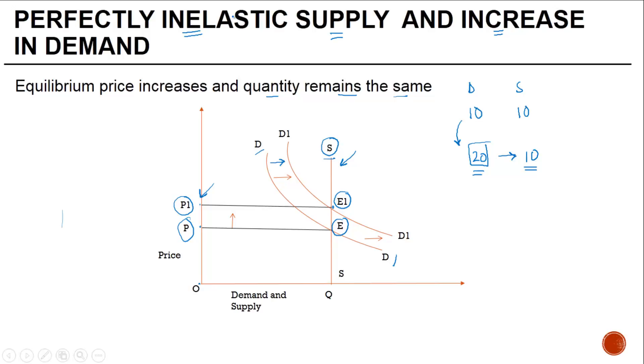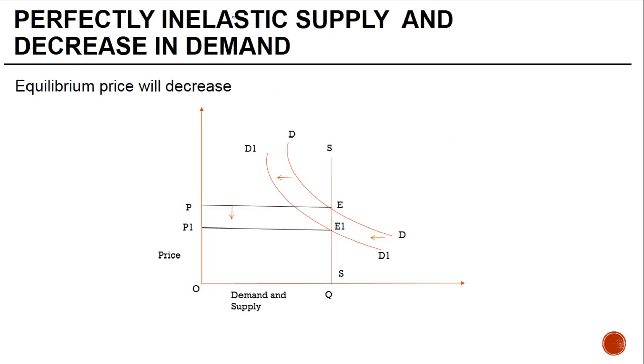Second could be the supply again remains inelastic and there is a decrease in demand. So let's say the demand was 10, the supply was 10, the supply remains the same but the demand decreases from 10 to 6 units.